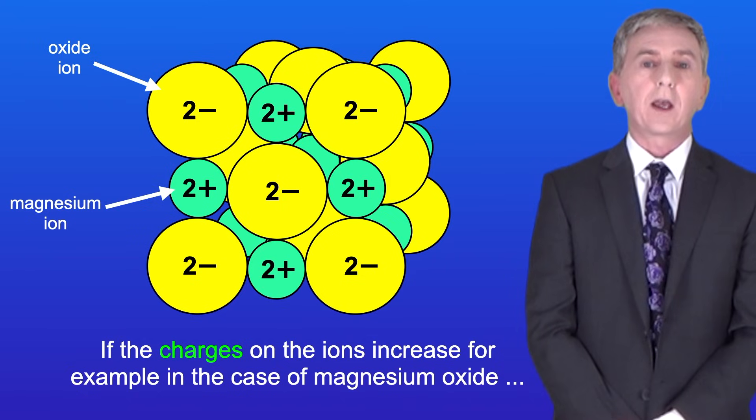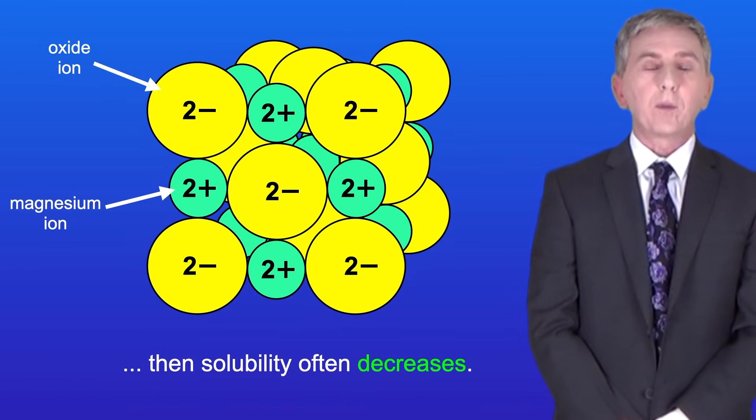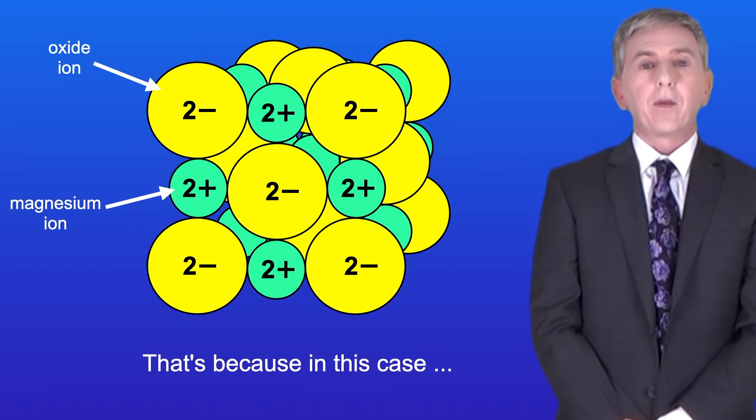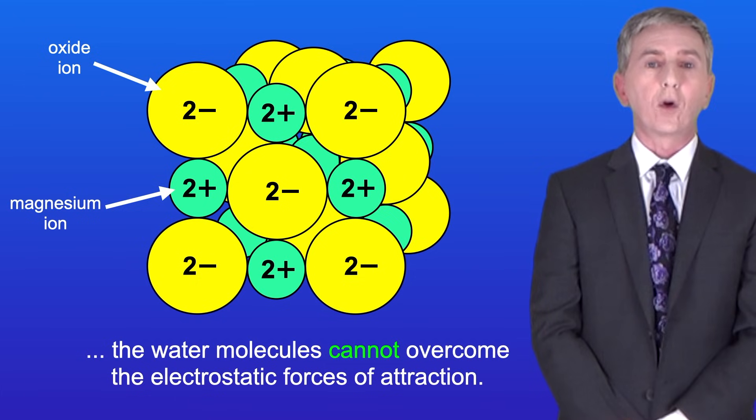If the charges on the ions increase, for example in the case of magnesium oxide, then solubility often decreases and that's because in this case, the water molecules cannot overcome the electrostatic forces of attraction.